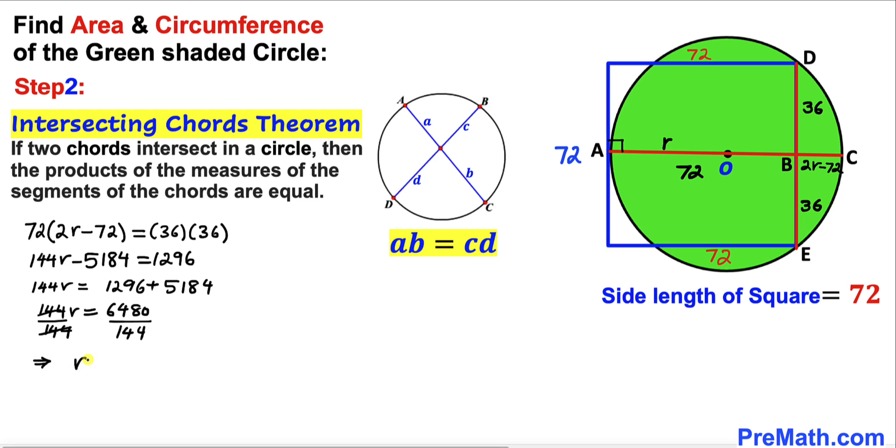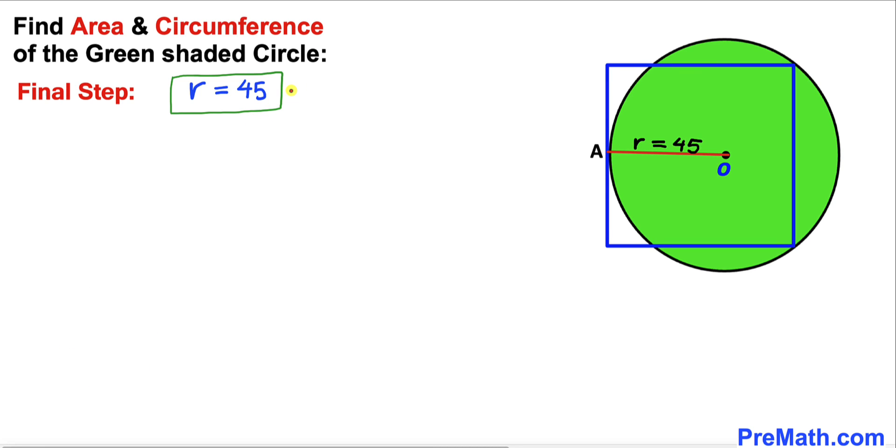And here's our final step. We already figured out our radius is 45 units. Now we are going to calculate the area of this green circle first. Let's recall the area of a circle formula: Area equals pi R squared. The area of this green circle is going to be pi times 45 squared. If we square that, that is going to give us 2025 pi. We know that pi is approximately equal to 3.14. If we plug it in, our area is going to be approximately 6361.7 square units.